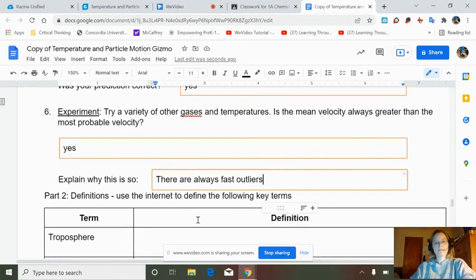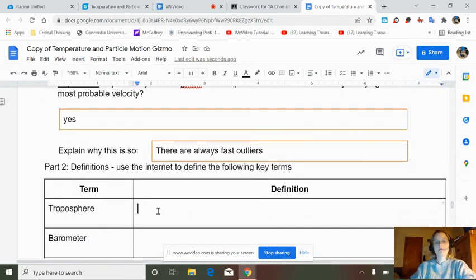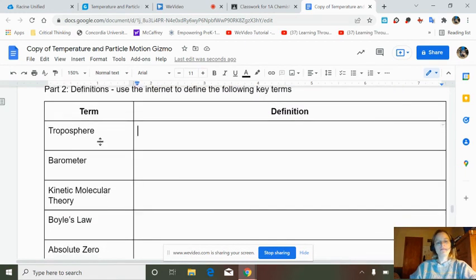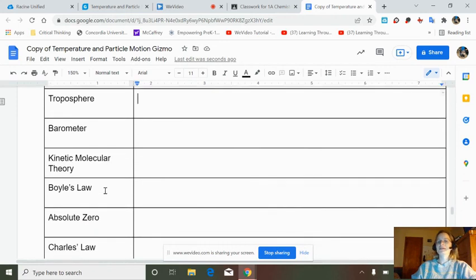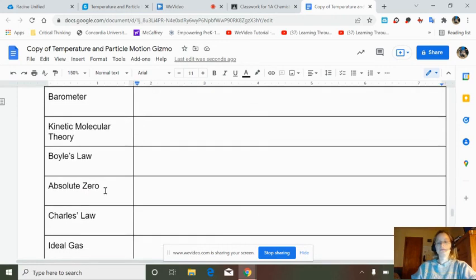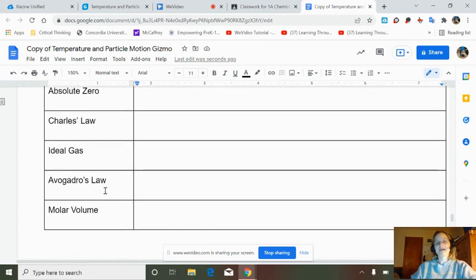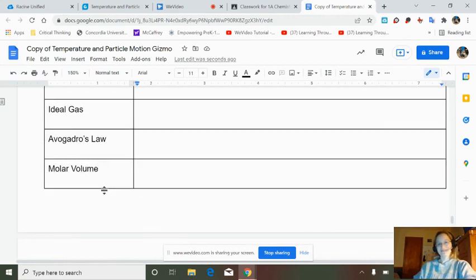So this is what I'm going to do with you. The rest is definitions, vocabulary for our upcoming unit where we're learning all about air chemistry. I'd like for you to use Google and look up the definition of the word troposphere, barometer, kinetic molecular theory, Boyle's law, absolute zero, Charles law, ideal gas, Avogadro's law, and molar volume. Define those, and then you can turn this in on paper or electronically. It is your choice. Thank you for watching.